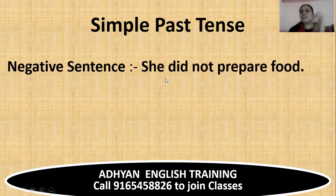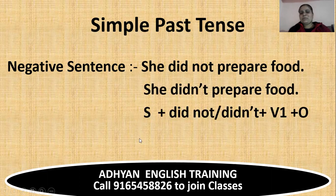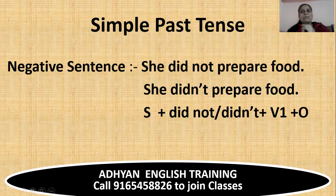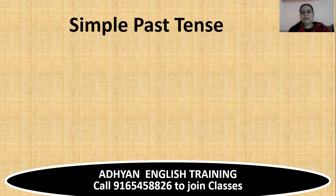Negative sentence: she did not prepare food, or she didn't prepare food. The structure is subject plus did not, or didn't, plus verb first form plus object. The thing to keep in mind is that if 'did not' is already there, then the verb first form will come.